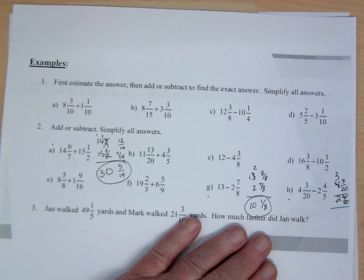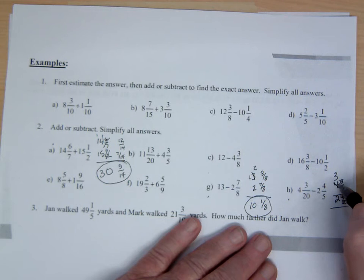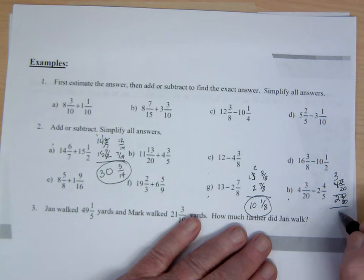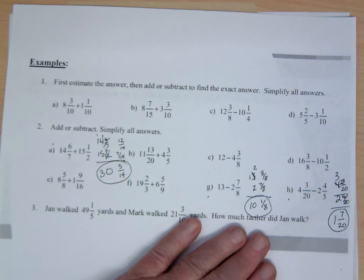And I'm going to be subtracting those. Now I can't take 16 from 3. So I'm going to be borrowing 1, making that into a 3. But then I'm bringing over 1. But 1 is 20 over 20.